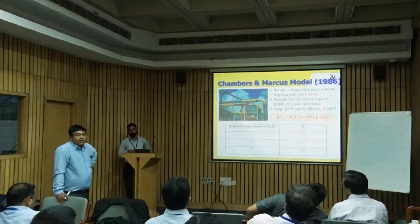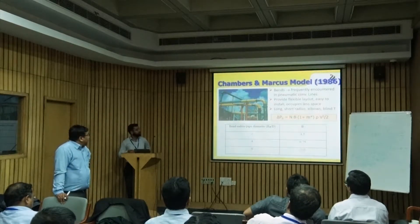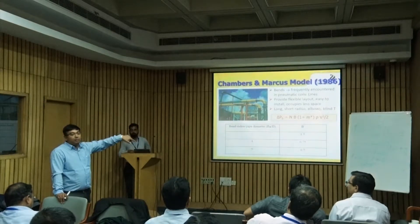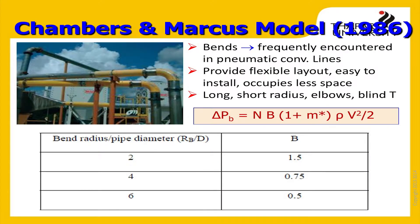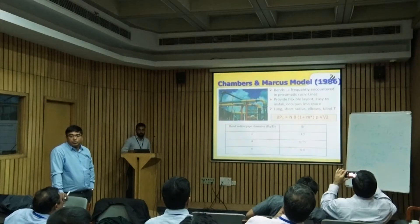You've got to multiply the number of bends you have in the line with a factor B, which depends on the radius of curvature to diameter ratio. I have given a table here — R_b is the radius of curvature of the bend. You can have a short radius bend or long radius bend; divide that by the pipe diameter. Depending on your R/D, you have a different value of B. You put that B in the line, multiply by the number of bends, then by (1 + M*) — where M* is the loading ratio — into density of air times velocity squared divided by 2. That's your pressure drop for the bends.